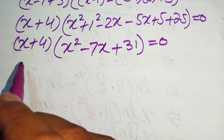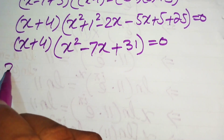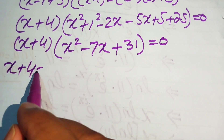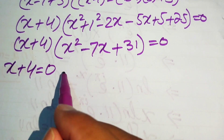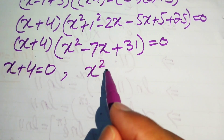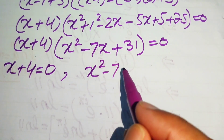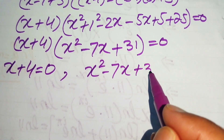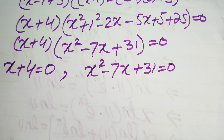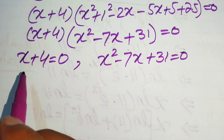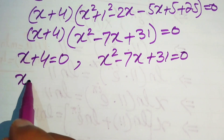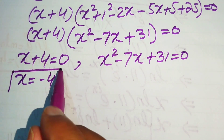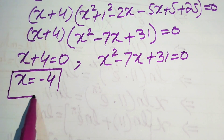Splitting into two sub-cases: the first sub-case is x plus 4 equals 0, giving x equals minus 4. The second sub-case is x squared minus 7x plus 31 equals 0.